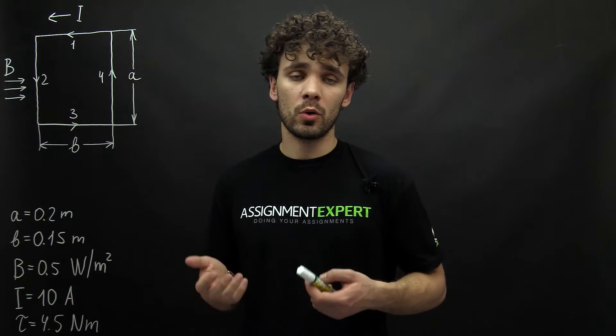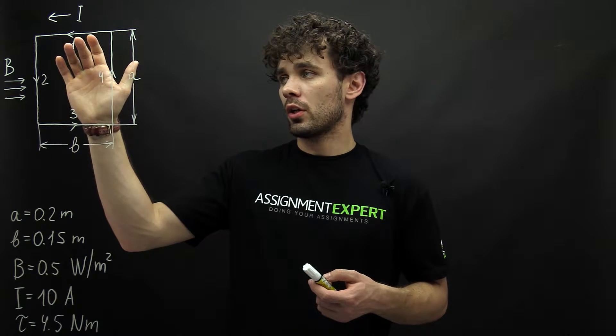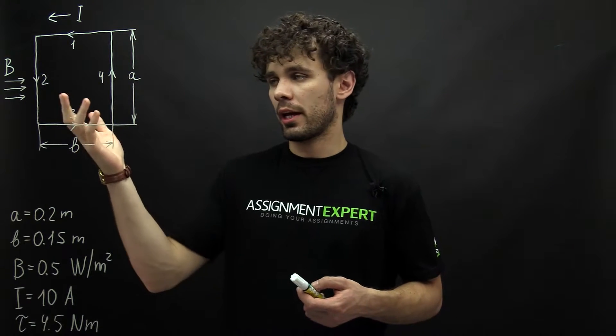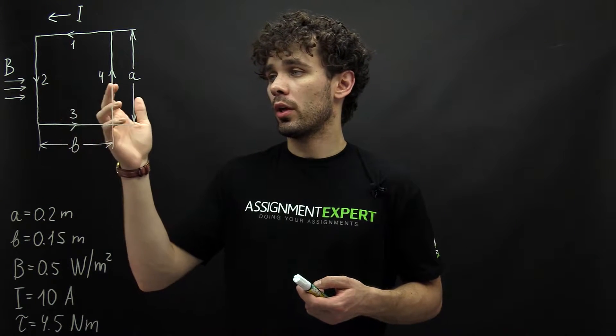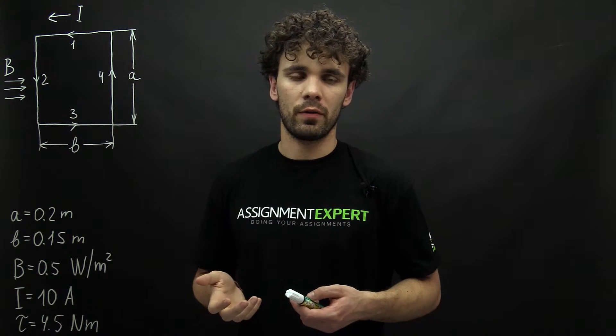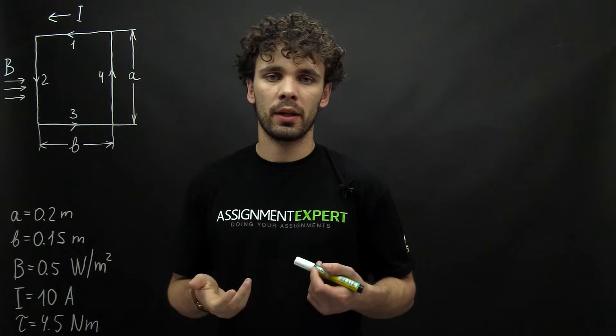Well, let's have a closer look at our picture. There are no magnetic forces on sides 1 and 3 because they are parallel to the magnetic field. However, there are magnetic forces at sides 2 and 4 as they are perpendicular to the field and we can find them from the equation for magnetic forces.